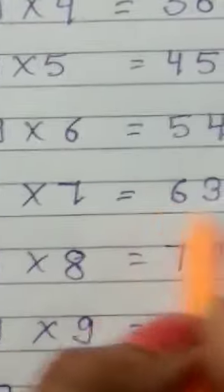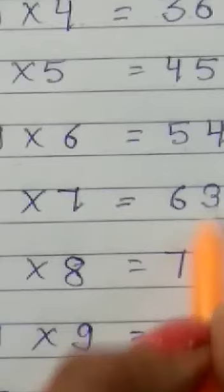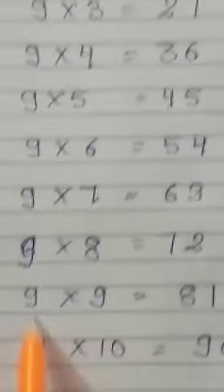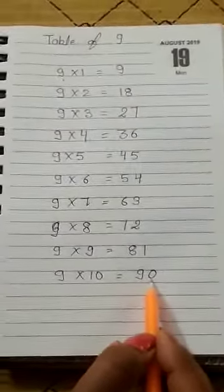9 7's are 63. 9 8's are 72. 9 9's are 81. And 9 10's are 90.